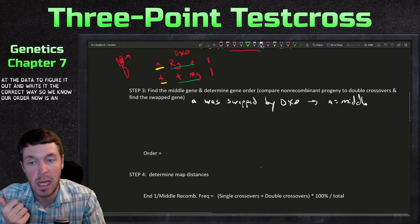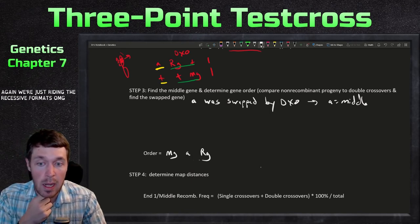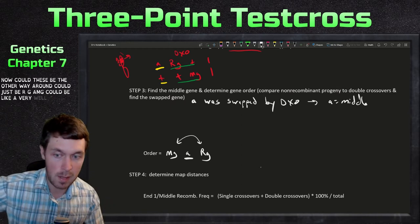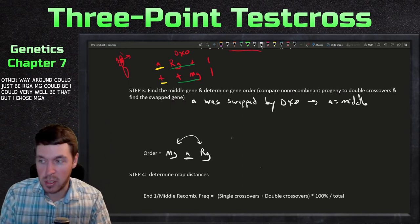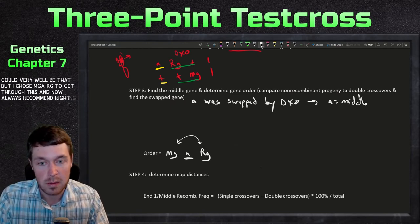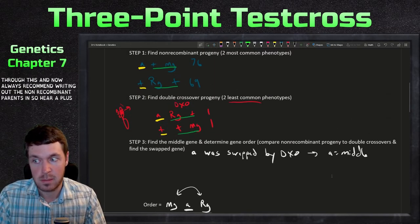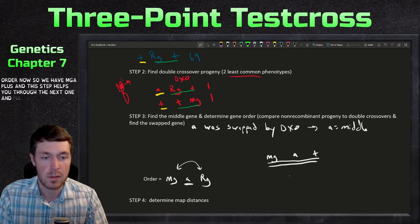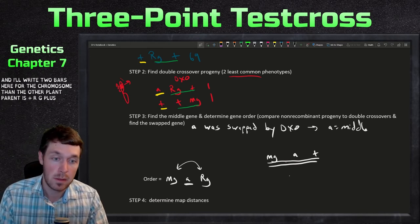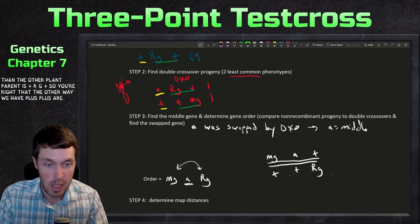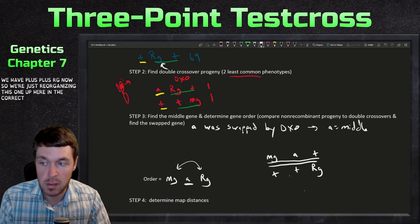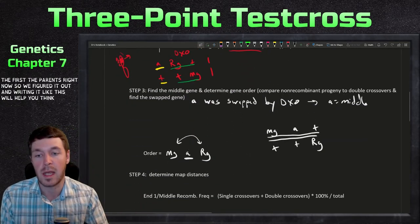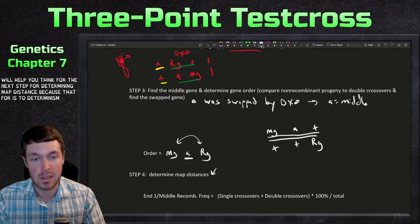We now know the gene order is mg-a-rg. It could also be written rg-a-mg, but we'll use mg-a-rg. I always recommend rewriting the non-recombinant parents in the correct order, so: mg-a-plus over plus-plus-rg. This step helps you through the next one. The parents were unknown but we figured them out, and writing them in the correct format will help us determine map distances in step four.